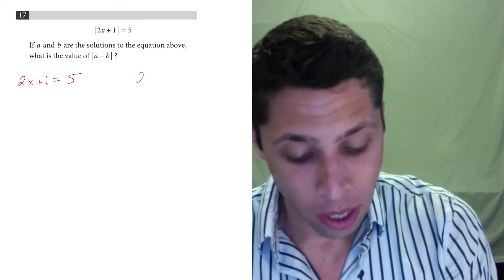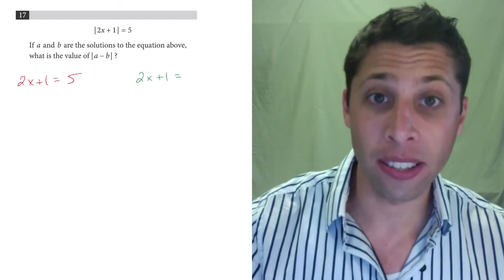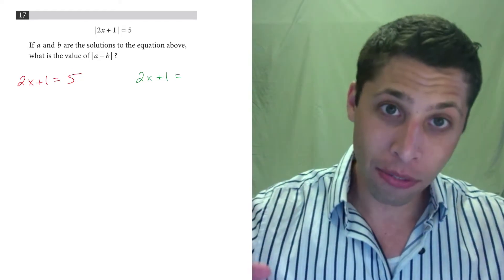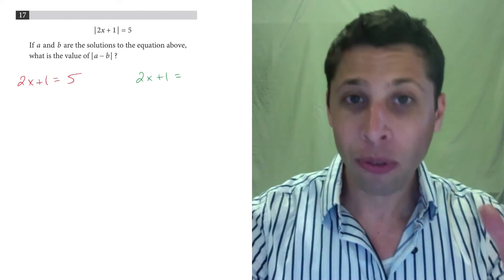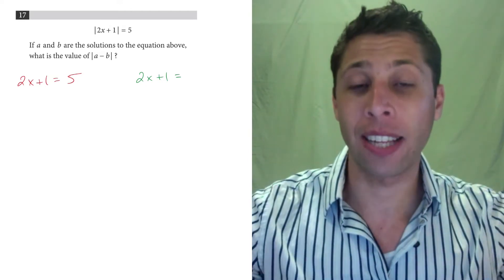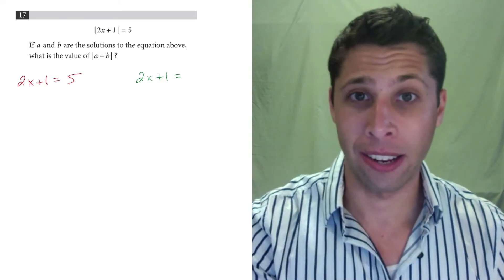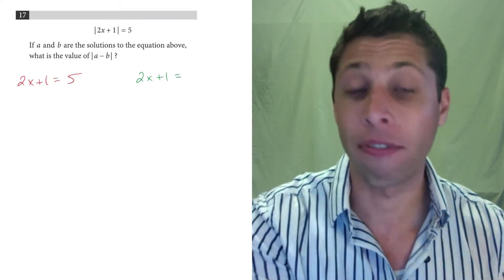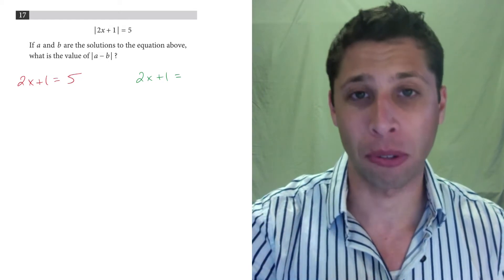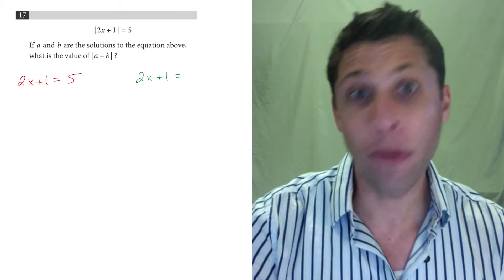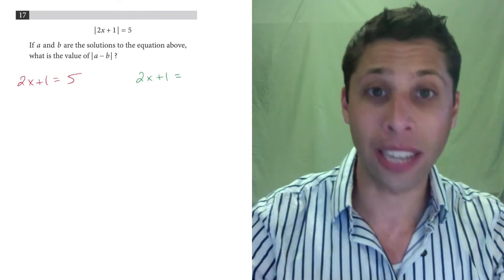The other equation captures the situation where absolute value actually does have an impact. If the stuff inside the absolute value bars is negative, the absolute value bars make it positive. If 5 is inside those bars, it would just be 5. But if negative 5 were inside those bars, it would become positive 5. That's what's getting lost when we put those bars up, so we need to bring it back.